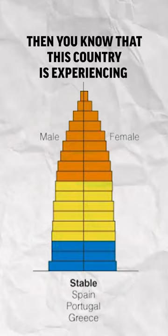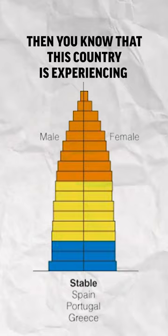But if these two groups are roughly even and you have more of a house shape, then you know that this country is experiencing relatively low population growth and may even be approaching population stability.